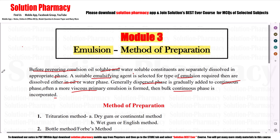When we make any emulsion, there are two phases: one oil phase and one water phase. First, we add the oil phase to the water phase. The oil phase needs to be dissolved in the other phase. A more viscous primary emulsion is formed first, and then the bulk continuous phase is incorporated.